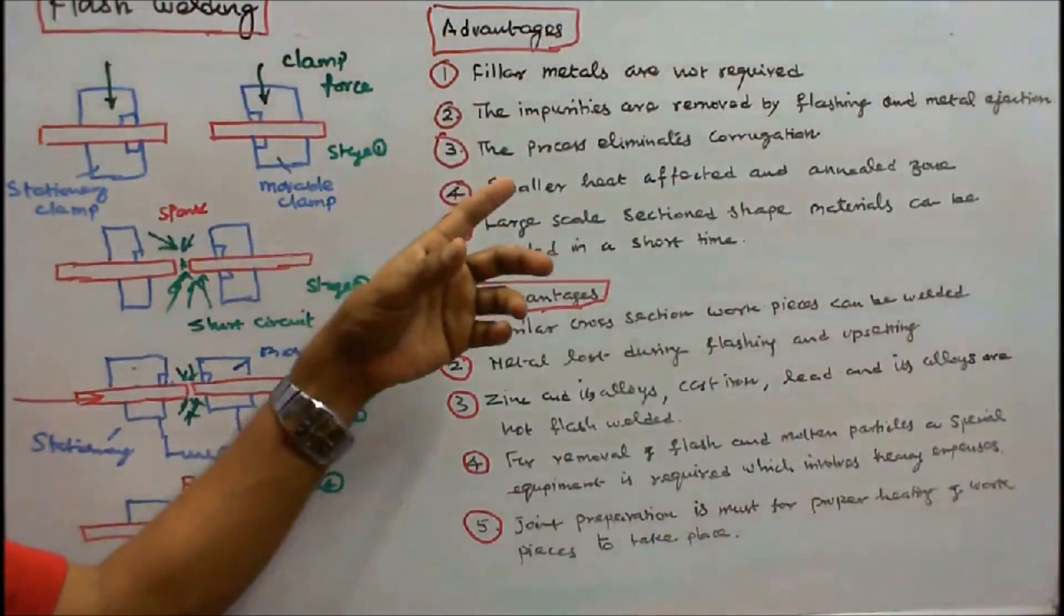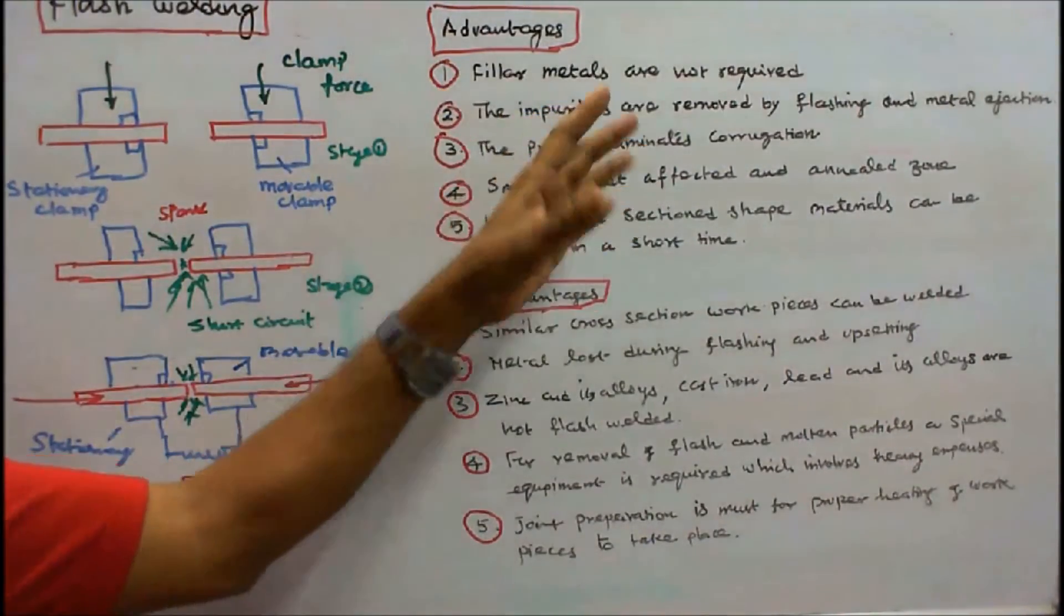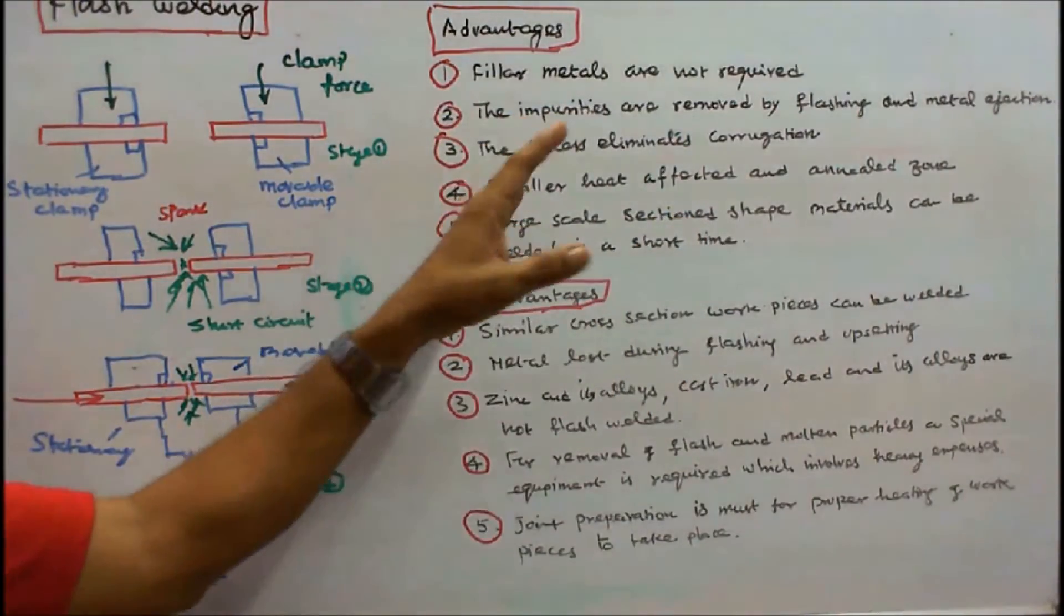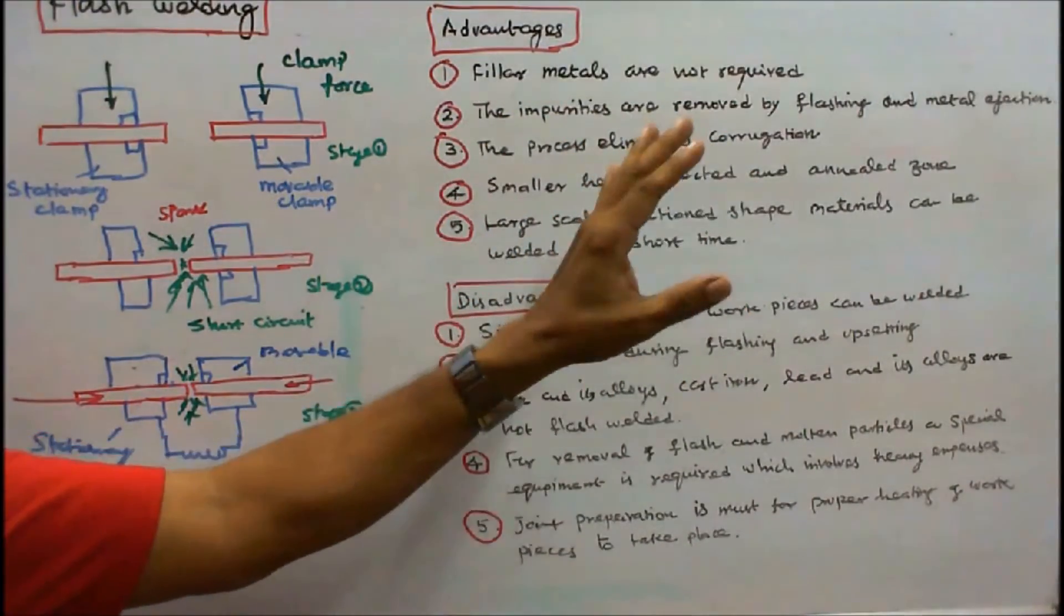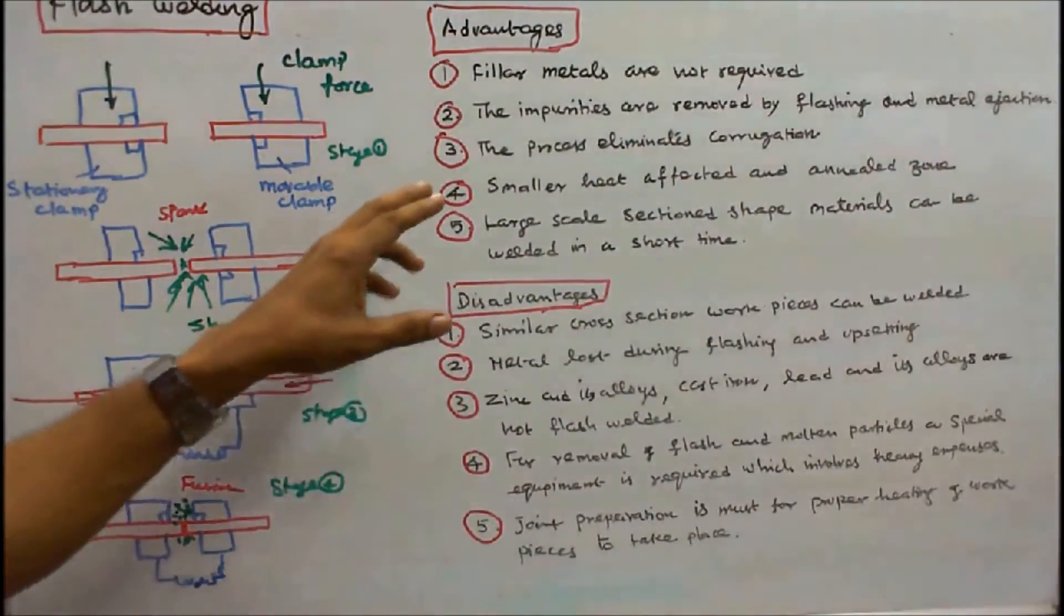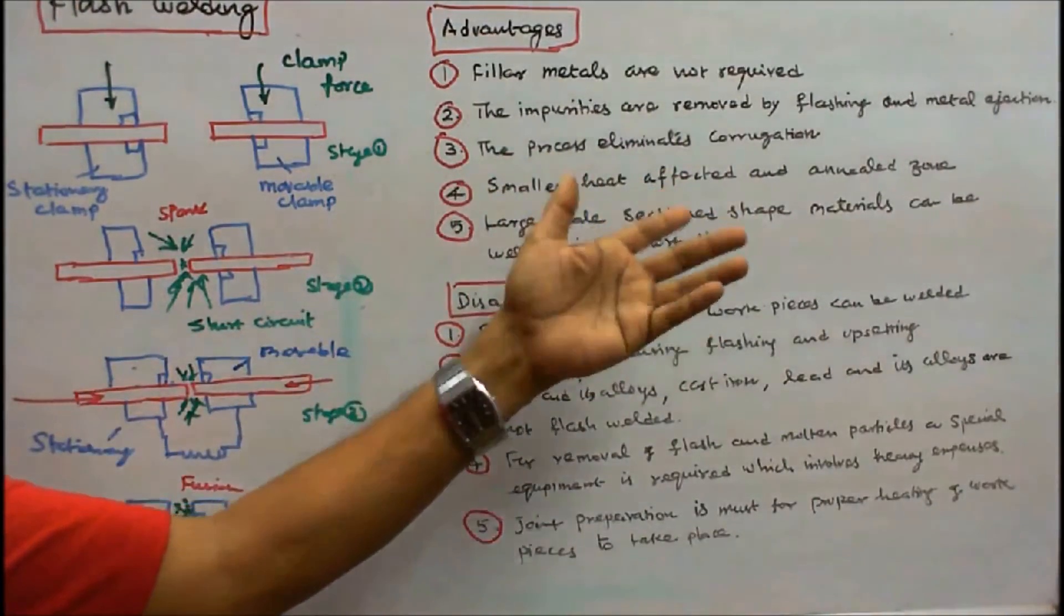The advantages of flash welding are: 1. Filler metals are not required. 2. Impurities are removed by flashing and metal ejection. 3. The process eliminates corrugation. 4. Smaller heat affected and annealed zone.